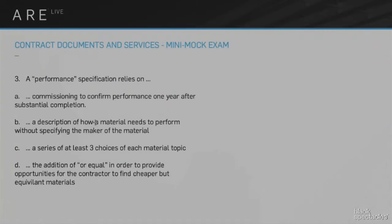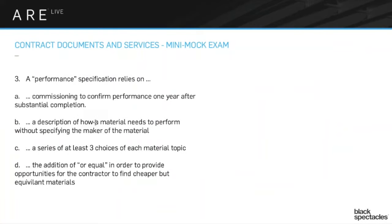Number three: a performance specification relies on — answer A would be commissioning to confirm performance one year after substantial completion. Answer B would be a description of how a material needs to perform without specifying the maker of the material. Answer C would be a series of at least three choices of each material topic. And answer D would be the addition of 'or equal' in order to provide opportunities for the contractor to find cheaper but equivalent materials.